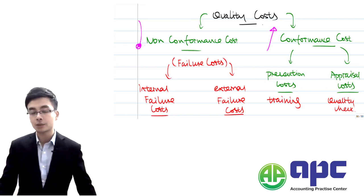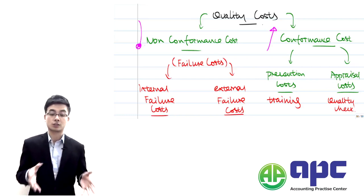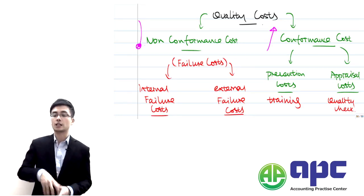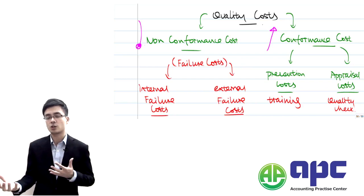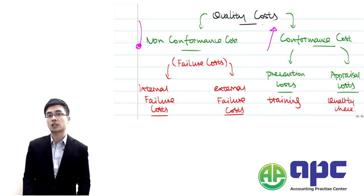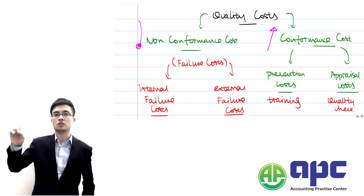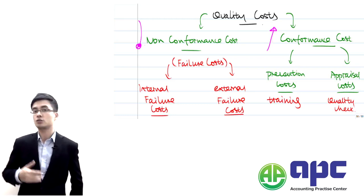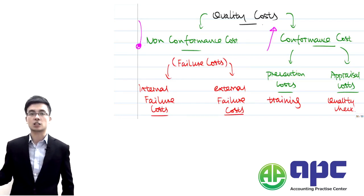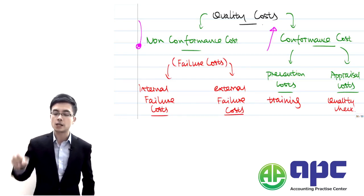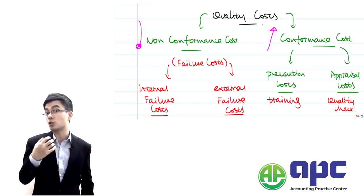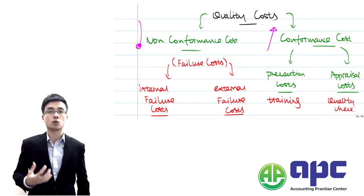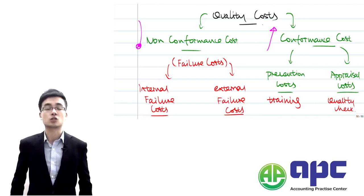In the exam, what the examiner expects you to do is to comment on each of the components within non-conformance as well as conformance costs, their interrelationship, and also — given company information detailing which cost is non-conformance and which is conformance — to do benchmarking against other companies. You need to identify and understand what components relate to non-conformance costs and what components relate to conformance costs.